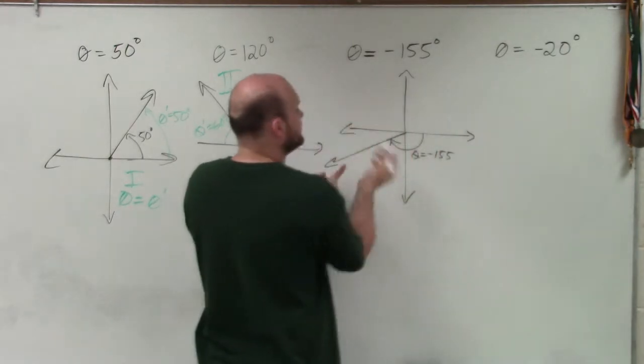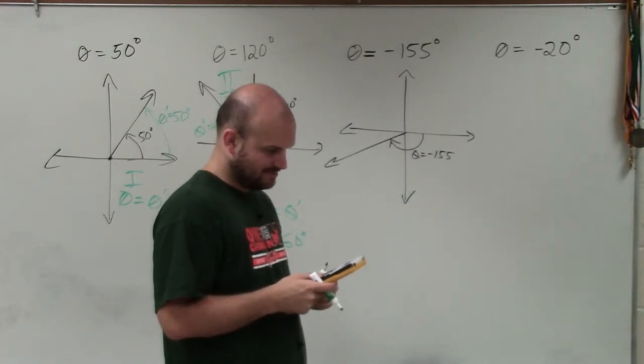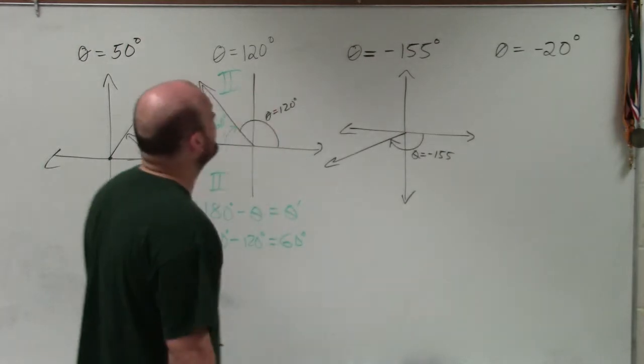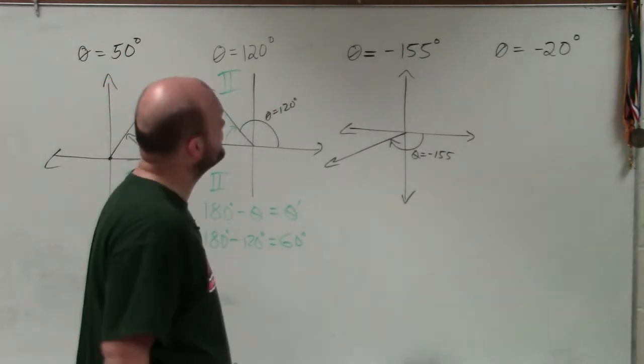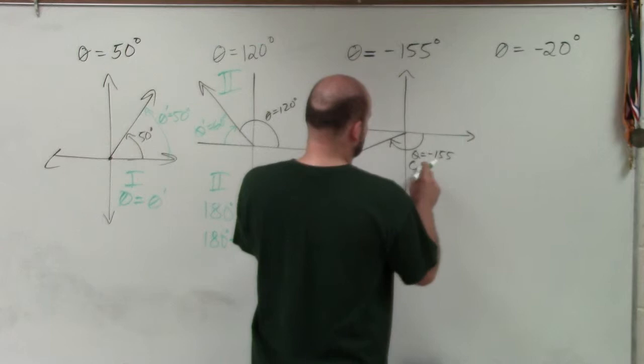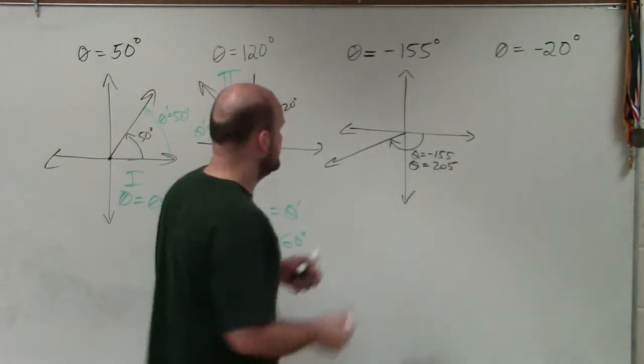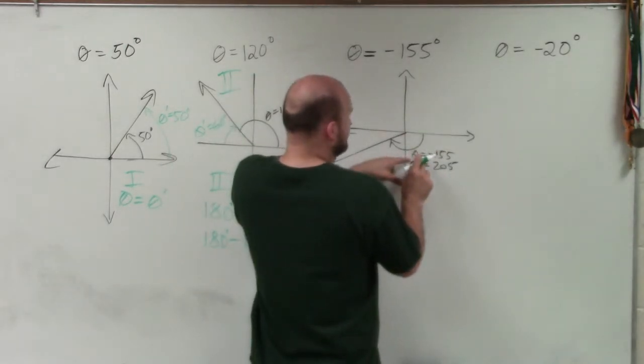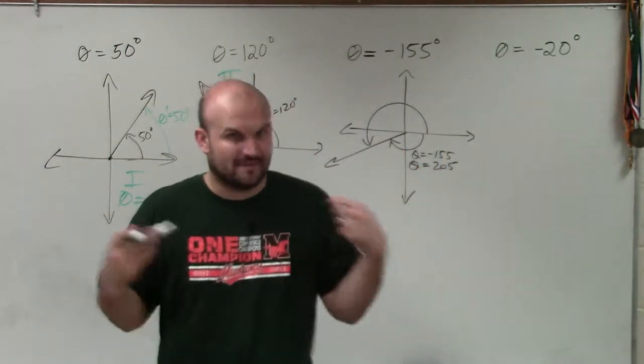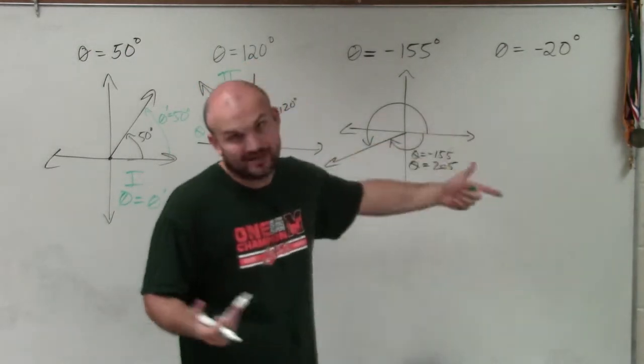So there's theta, which equals negative 155. If I found the coterminal angle, basically what I'd do is I would add 360 to it. So I'd add 360 around to be able to find the measurement. If I do, 155, that's going to be 200 and 205, which would be a positive answer. So the coterminal angle is the same thing as theta equals 205.